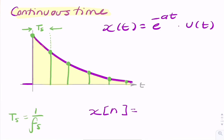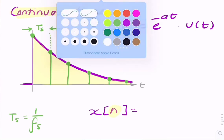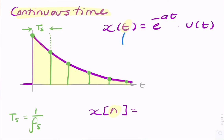So the question is: how do I represent time as n? And the way to do this is really easy — you simply replace t with n times uppercase T, or Ts, your sample period.